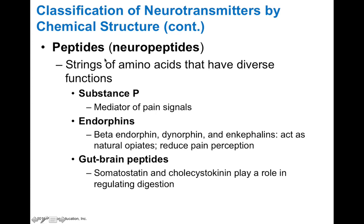Neurotransmitters can also be made of peptides, which are strings of amino acids with diverse functions. Substance P is a mediator of pain signals, and the endorphins — like beta-endorphin, dynorphin, and enkephalins — are involved with modifying pain perception. These are actually natural opiates and natural painkillers. Gut-brain peptides like somatostatin and cholecystokinin play a key role in regulating digestion.